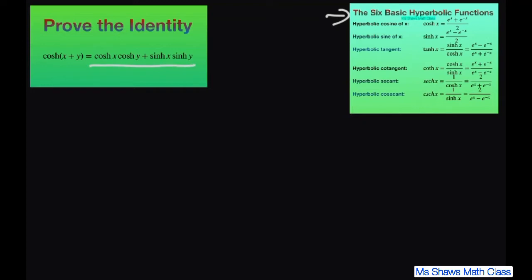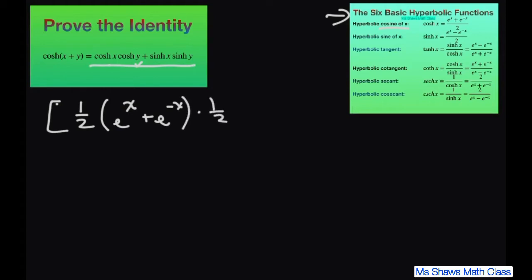Starting from this side, I'm going to write hyperbolic cosine of x and then hyperbolic cosine of y. So this is going to equal one half — bringing the one half out instead of the two — and for x we have e to the x power plus e to the negative x power, times one half, and then the y part is the same thing copied with y.